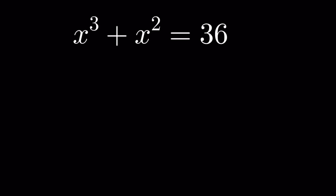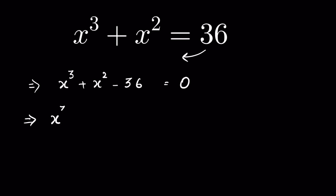We have x³ + x² = 36 and we need to find the solution for x. Sending 36 to the left-hand side gives x³ + x² - 36 = 0. We can rewrite -36 as -27 - 9, so: x³ + x² - 27 - 9 = 0.